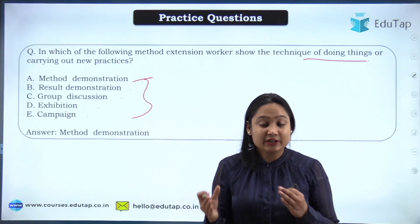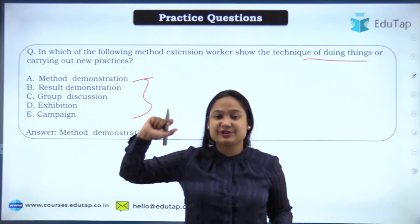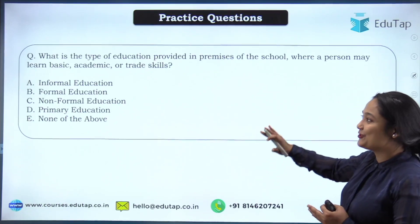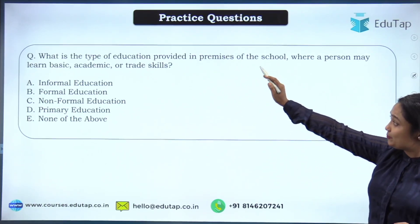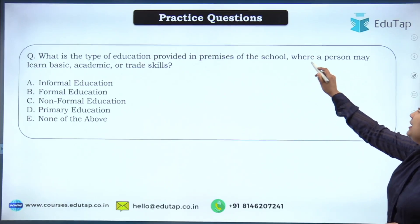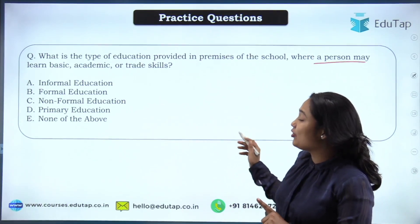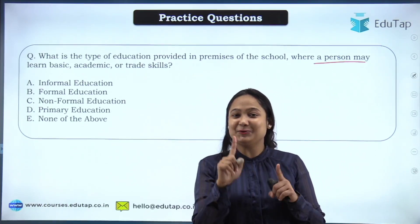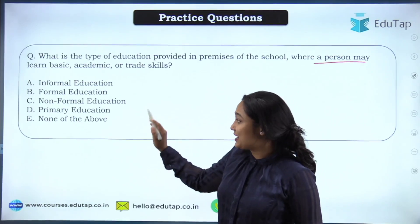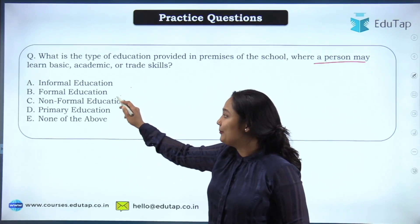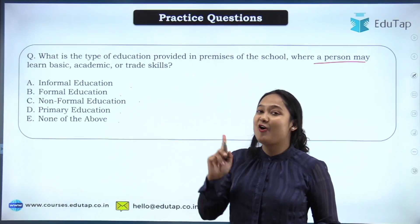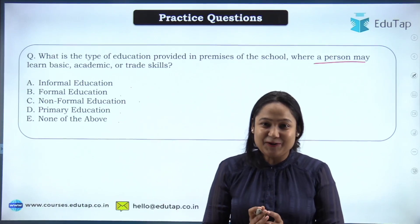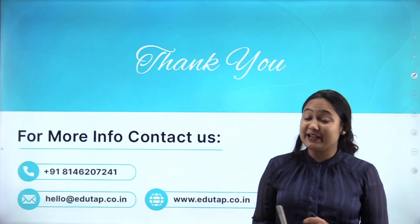Now here is your homework question: what is the type of education provided in the premises of a school where a person may learn basic academic or trade skills? The options are: informal, formal, non-formal, primary, or none of the above. Do let me know the answer in the comment section.